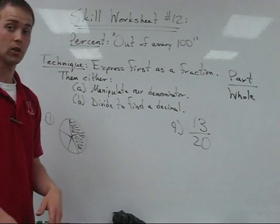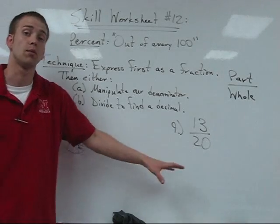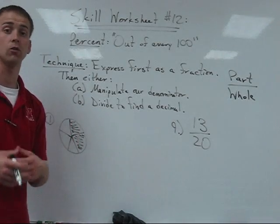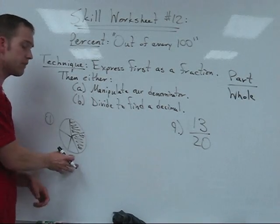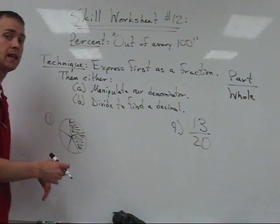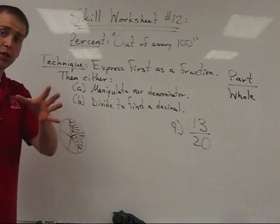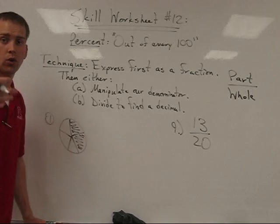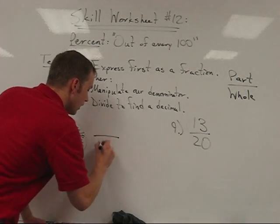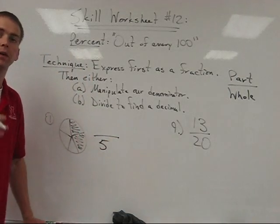Let's start with number one. You notice I give you a graph. Expressing this as a fraction first, we want to know how many total pieces there are. Of course, you'll notice there are five pieces. Out of five pieces, how many are shaded?